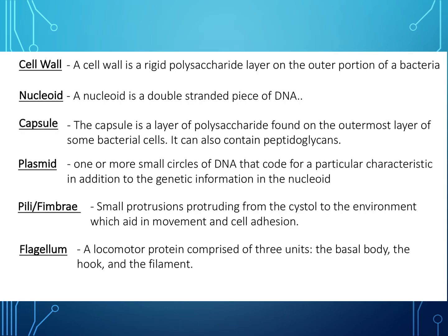What does a cell wall do? The cell wall is a rigid polysaccharide layer on the outer portion of a bacteria. The nucleoid is a double-stranded piece of DNA. The capsule is a layer of polysaccharide found on the outermost layer of some bacterial cells — it can also contain peptidoglycans. The plasmid is one or more small circles of DNA which code for a particular characteristic in addition to the genetic information in the nucleoid.